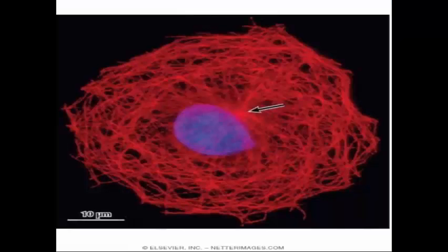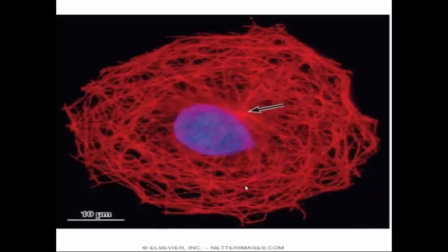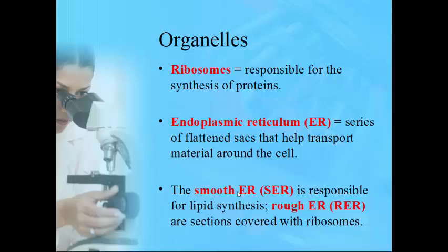This image, even though it looks like an illustration, is a real scanning electron image taken of a cell. The red things that look like fibers or hairs are the cytoskeleton — it gives the cell its oval or roundish shape. The bluish-dyed object is the nucleus, the control center of the cell.